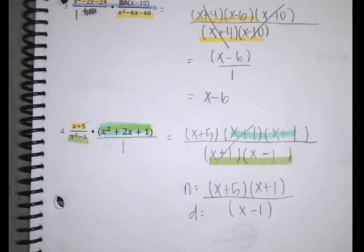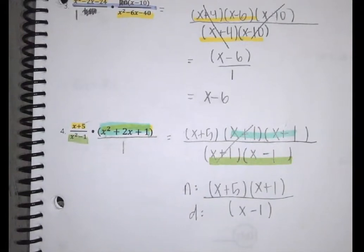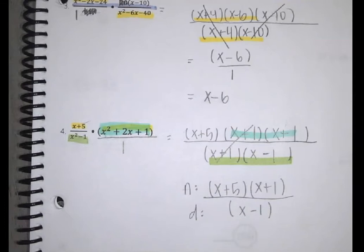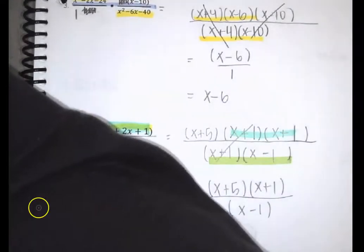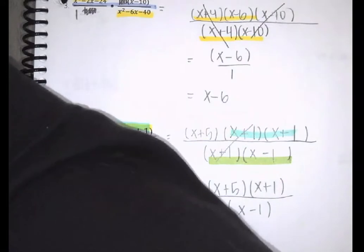That is it for multiplying rational expressions. Multiplying and dividing rational expressions are so similar that the next lesson is probably going to be super quick — because to divide rational expressions, you just turn them into a multiply. So that's where we are going next. Go do your Canvas quiz now.